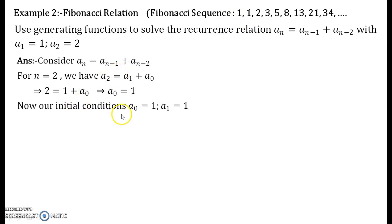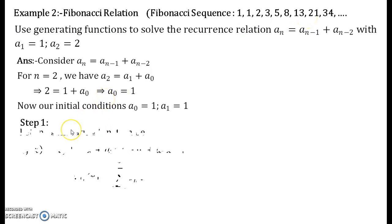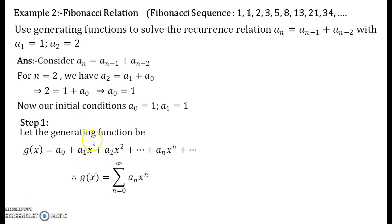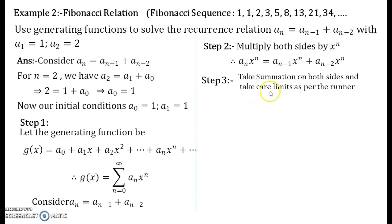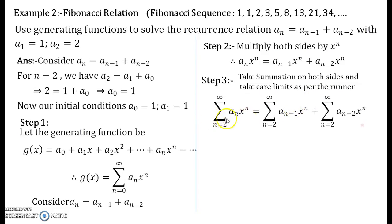Now let us start solving using generating functions to find the nth term formula for the Fibonacci sequence. Take the generating function formula as step 1. You define the generating function, then you consider the recurrence relation and multiply x to the power n on both sides. Now in the recurrence relation observe that the smallest suffix is n minus 2.